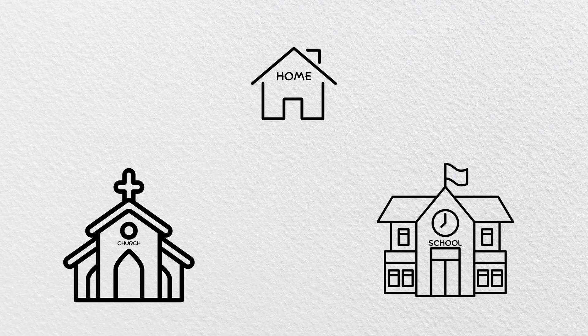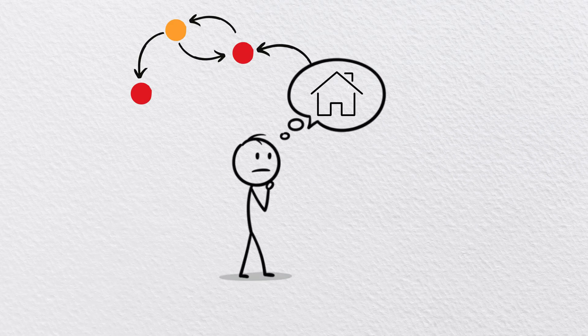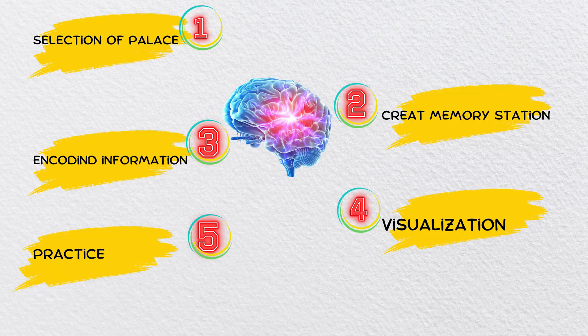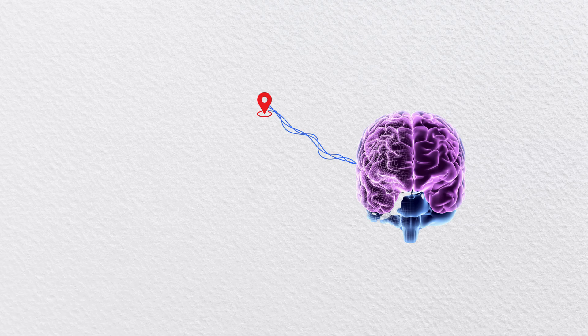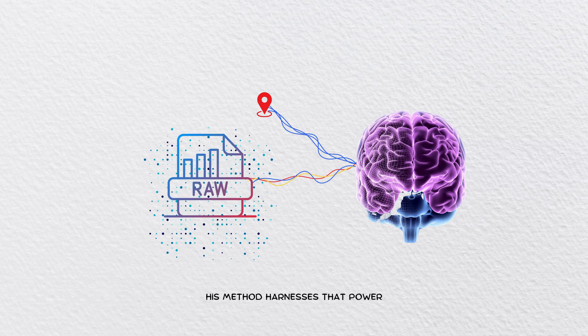How it works: imagine a familiar place like your home. Associate each thing you want to remember with an object in that space. When recalling, mentally walk through your memory palace. Your brain is wired to remember locations better than raw data. This method harnesses that power.